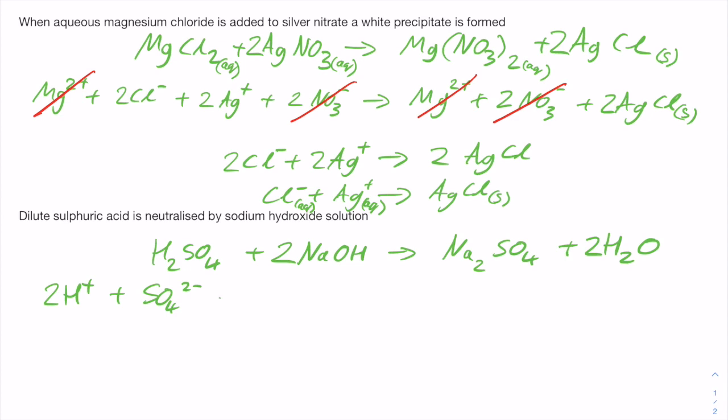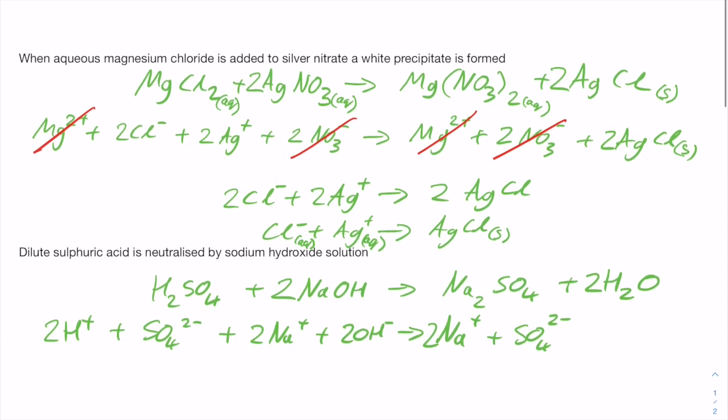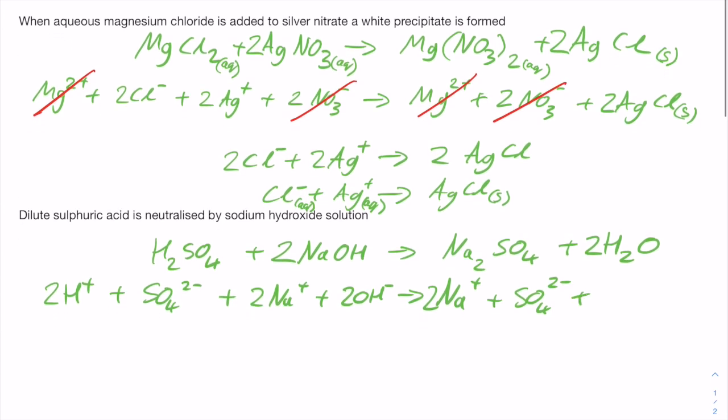Making 2Na+ plus SO4 2- and then the water is a liquid so we'll stay as H2O.